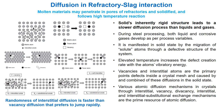A brief discussion on diffusion mechanisms emphasizes their importance during high temperature corrosion. Solids' inherently rigid structure leads to slower diffusion than liquids and gases. Both liquid and corrosive gases develop as per process variables during steel processing, and diffusion is manifested in solid state by the migration of solute atoms through a defective structure.